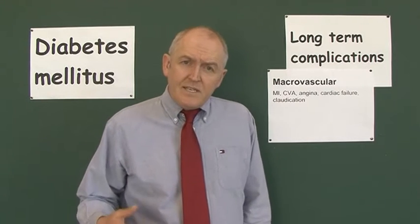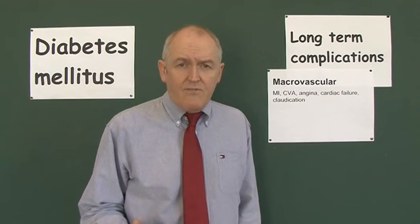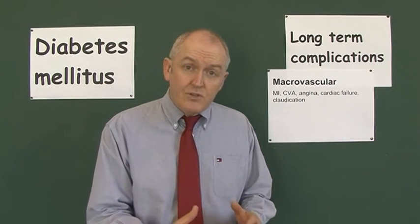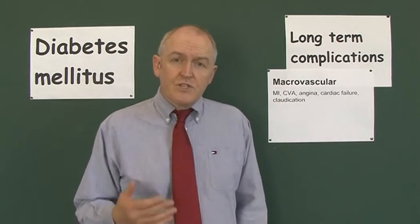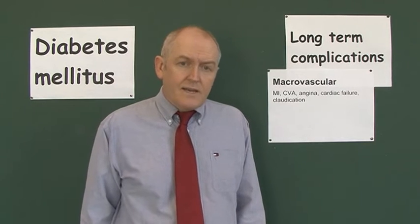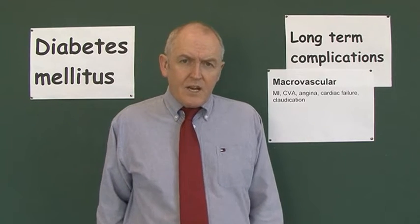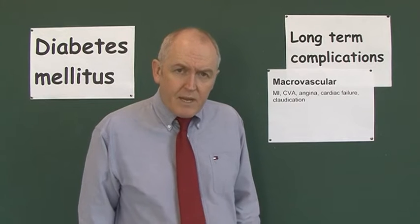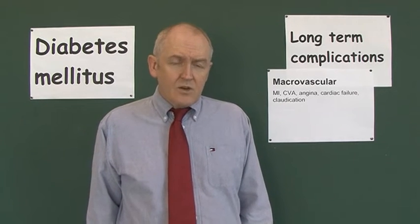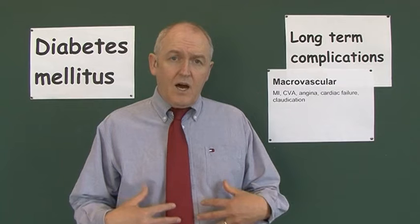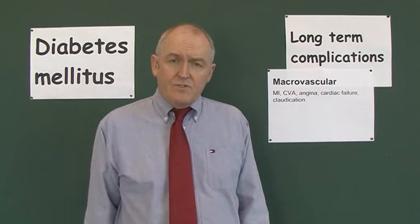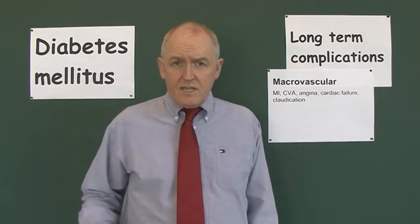In diabetes, if the blood sugar is high for long periods of time, there's glycosylation of the cardiac muscle, which contributes to the ischemic etiology of cardiac failure. Claudication describes the limping caused by peripheral vascular disease, caused by atheroma of the large blood vessels such as the femoral artery going down towards the legs.